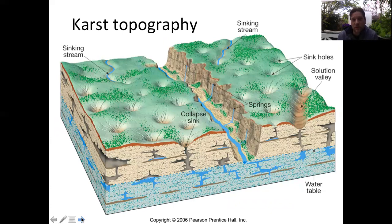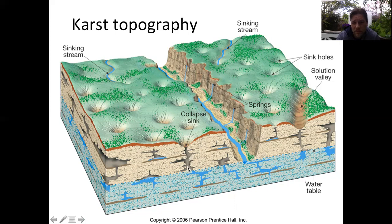In areas where limestone is the bedrock, groundwater can dissolve the rock itself. The resulting landscape is called karst topography. Karst areas feature lots of sinkholes, which form from collapsed caverns where water has pooled and eaten away at the limestone bedrock. Florida has many karst topography areas, as do different parts of China. Wherever you have limestone bedrock and a humid climate with lots of rain, you can have karst topography.